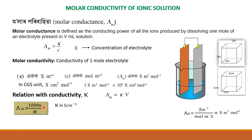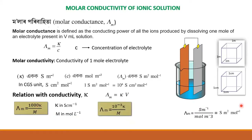When kappa unit is S per cm and M unit is mol per liter, then lambda M equals 10 to the minus 3 into kappa divided by M. So kappa in S/cm and M in mol/liter gives lambda M in the applicable unit. This is the relation applicable to the numerical problems.